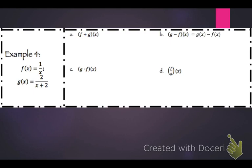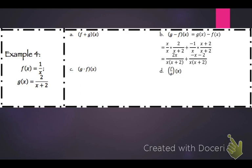For g minus f of x, we take g of x which is 2 over x plus 2, minus 1 over x. Getting a common denominator and distributing the subtraction sign, multiply the first by x over x and the second by x plus 2 over x plus 2. You get 2x over x times x plus 2, plus negative x minus 2 over x times x plus 2, which gives x minus 2 over x times x plus 2. The domain is x such that x cannot equal 0 and cannot equal negative 2.